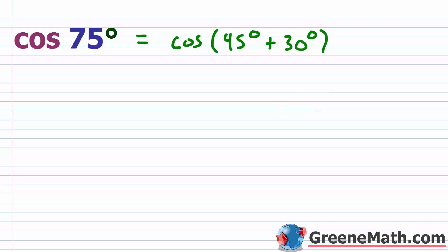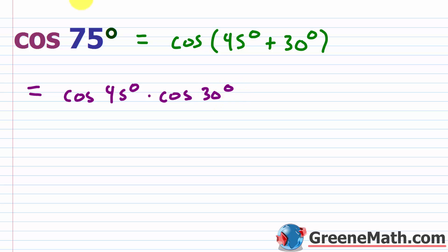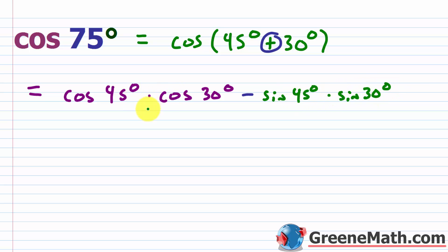So I'll write this as the cosine of 45 degrees plus 30 degrees, and use the sum formula. That gives us the cosine of 45 degrees times the cosine of 30 degrees. Because we have a plus in the original, we want a minus here, so we subtract the sine of 45 degrees times the sine of 30 degrees.